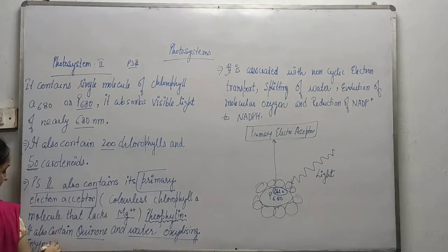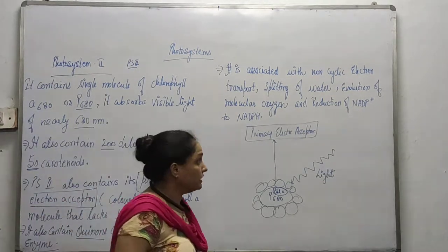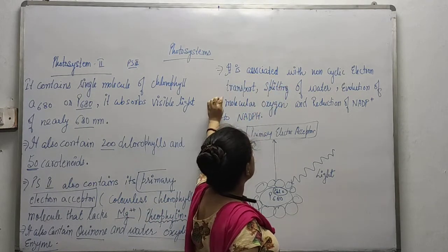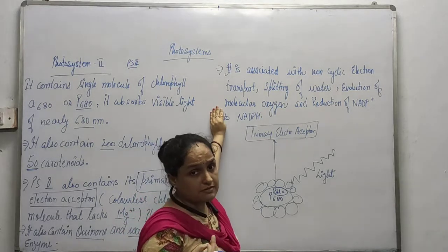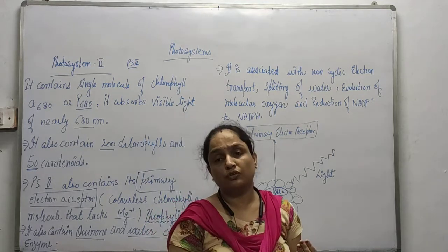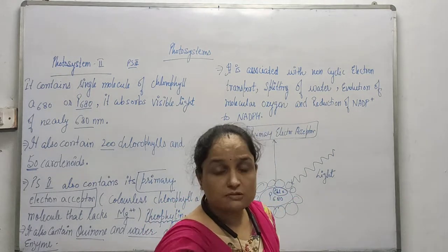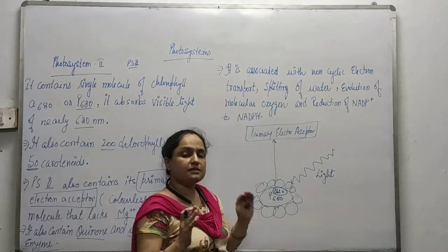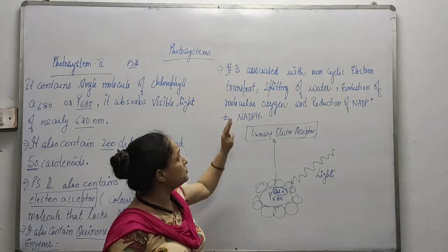Pigment system 2 also contains an oxidizing enzyme. It is associated with non-cyclic electron transport only. Pigment system 1 had a relation with both cyclic and non-cyclic systems, but in this case it is associated with only the non-cyclic transport system.